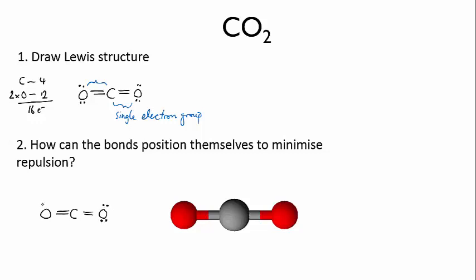So for CO2, the VSEPR drawing looks just like the Lewis structure, and we can indicate that the bond angle, that's the angle made by these two bonds, is 180 degrees. This molecular shape is very sensibly called linear.